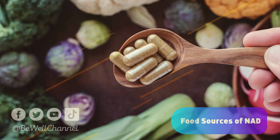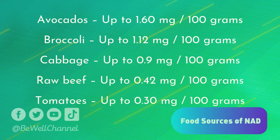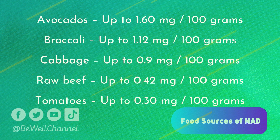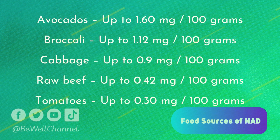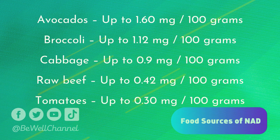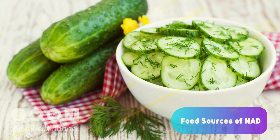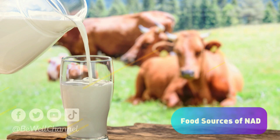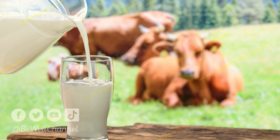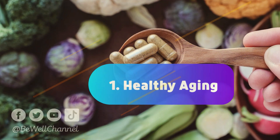Food sources of NAD: you can find the precursor of NAD and NMN in several food sources, including avocados (up to 1.60 mg per 100g), broccoli (up to 1.12 mg per 100g), cabbage (up to 0.9 mg per 100g), raw beef (up to 0.42 mg per 100g), and tomatoes (up to 0.30 mg per 100g). You can also find NMN in cucumbers, edamame, fish, chicken, and cow's milk.